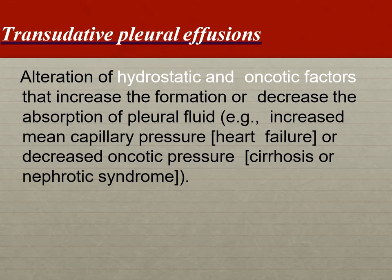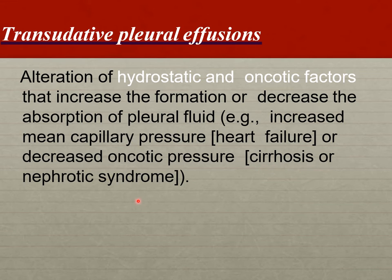In transudative effusion, there is alteration of hydrostatic and oncotic factors that increase formation or decrease absorption of pleural fluid. Causes include increased mean capillary pressure such as in heart failure, or decreased oncotic pressure such as in cirrhosis — where there is decreased protein production — or nephrotic syndrome, where there is increased loss of protein in the urine.